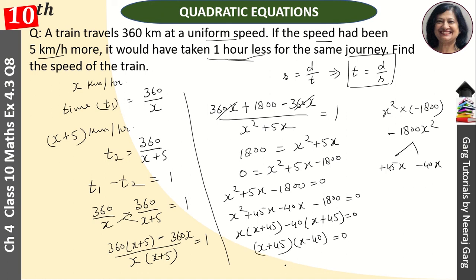This is our x value. One is 40 and the other is minus 45. We reject the negative value, so the speed is 40 km per hour. Right?